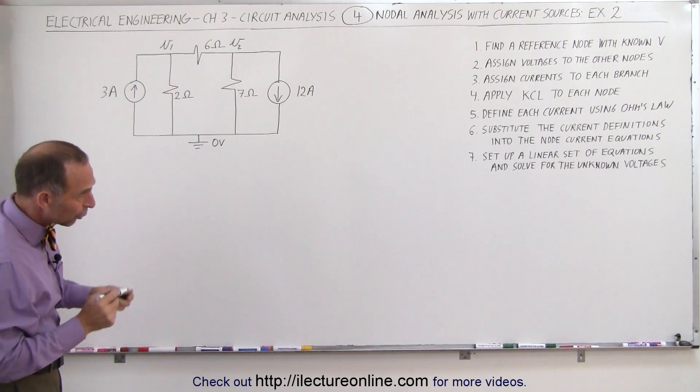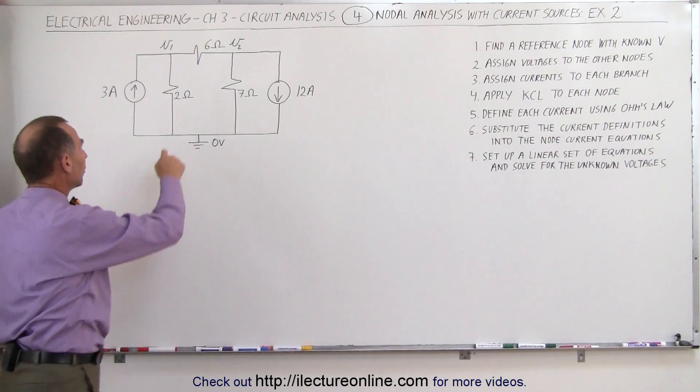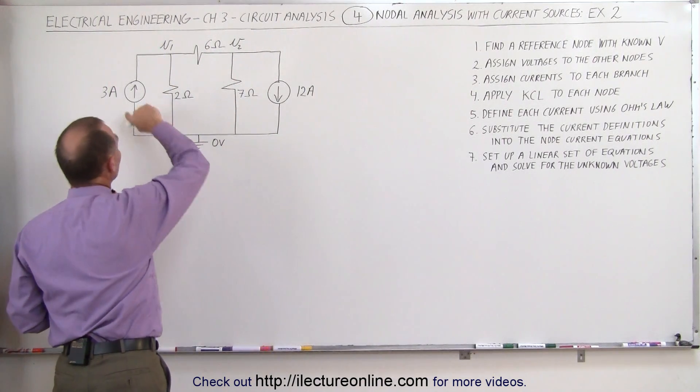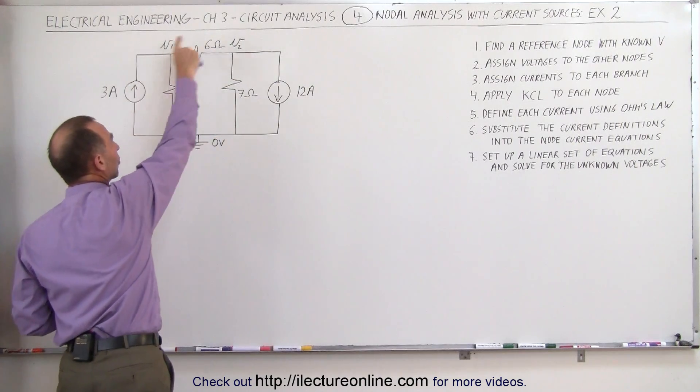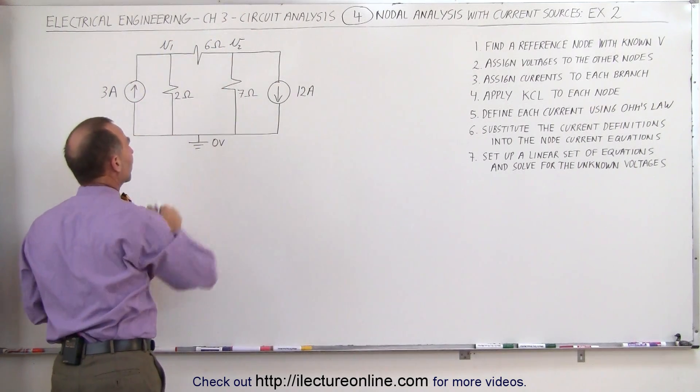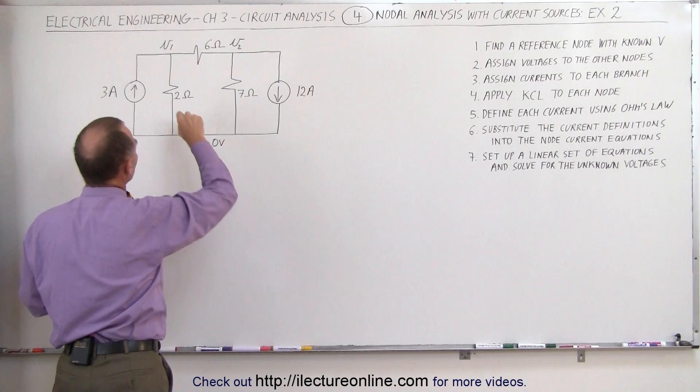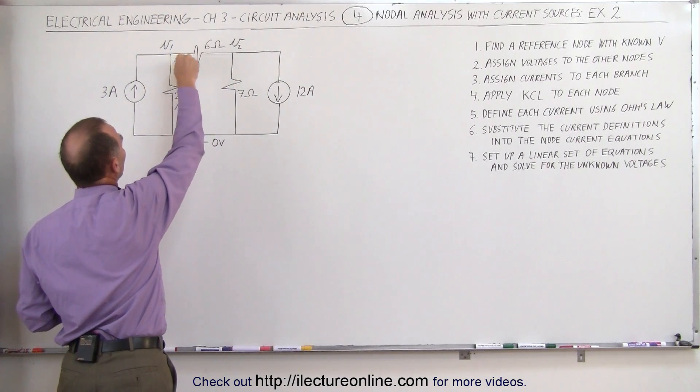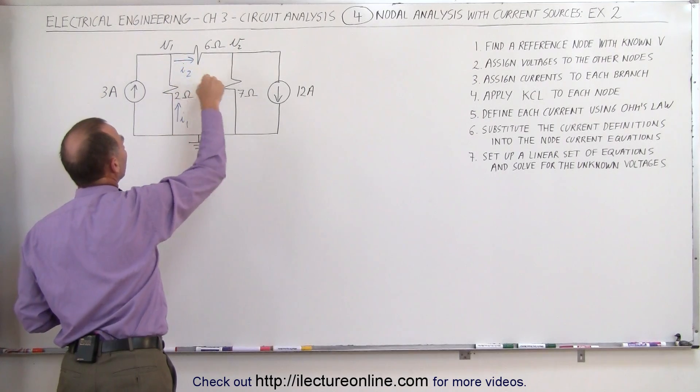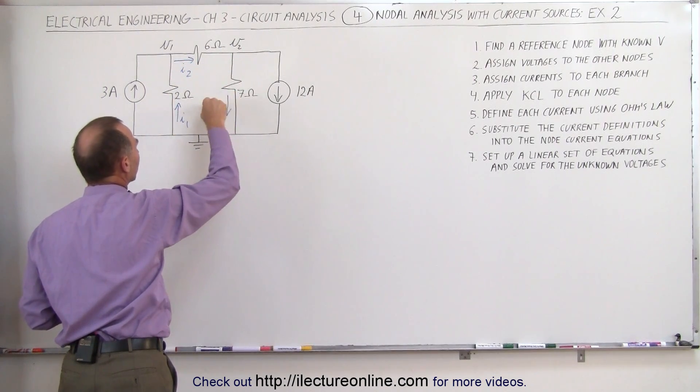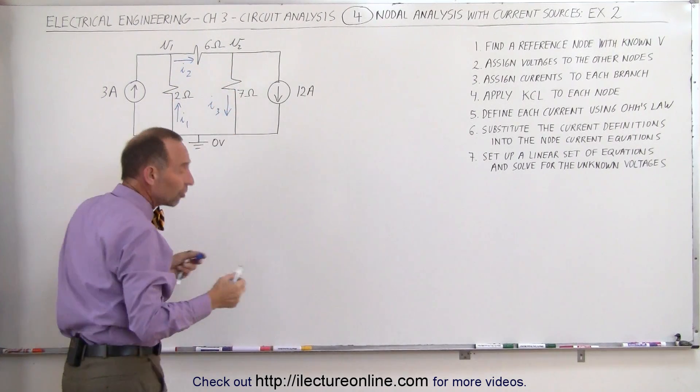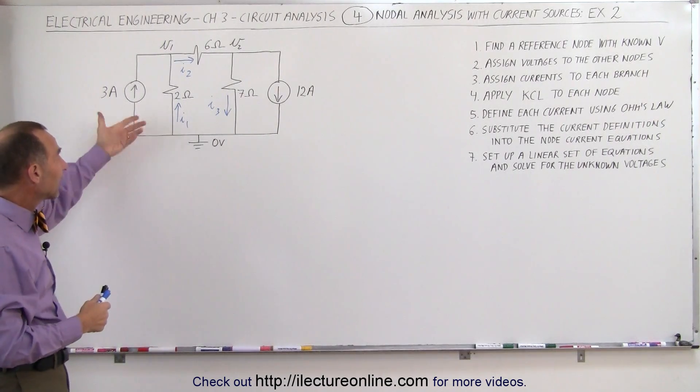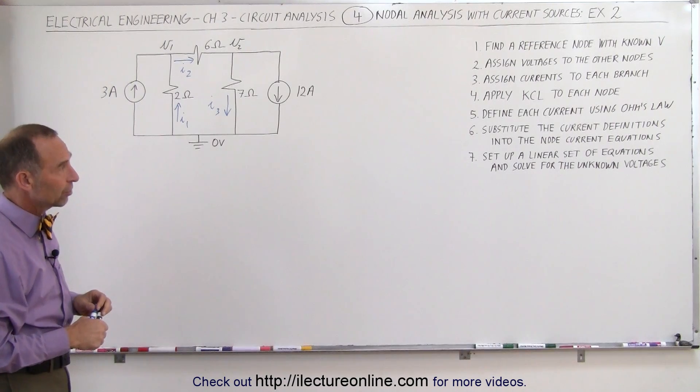The next step is to assign currents to each branch. We have three branches, and noticing that the current sources seem to drive current in a clockwise direction, I would assume that the current in this branch will be upward. Let's call it i1. The current in this branch to the right, let's call it i2, and the current here downward, let's call it i3. So that's a good assumption. Again, if we're wrong don't worry about it. We simply get a negative answer indicating that the current is actually in the opposite direction.